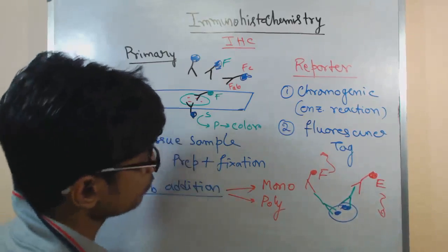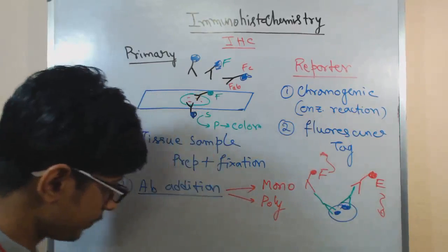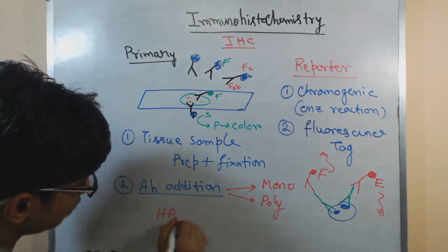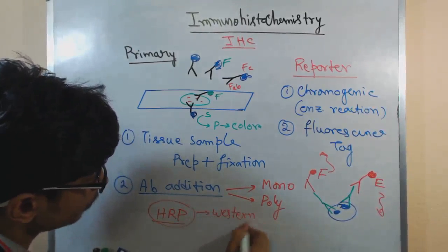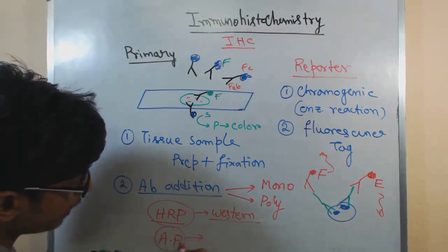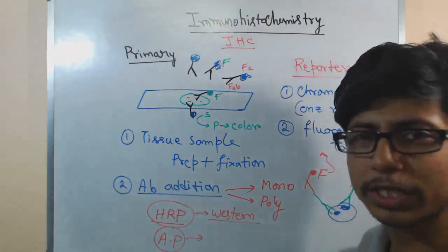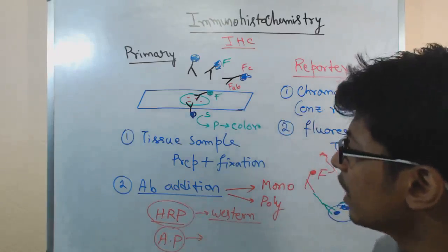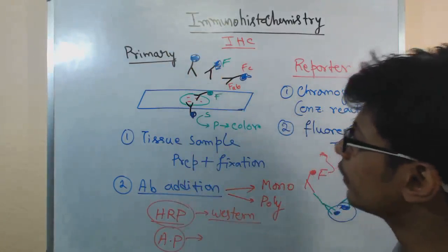The first one is specific with good attachment to the antigen; the second one can be modified easily. Two examples of such chromogenic enzyme-tagged antibodies: we can use the enzyme horseradish peroxidase — this is the enzyme also used in western blotting — and we can also use alkaline phosphatase, with color formation due to the phosphatase activity. These are the enzymes we can tag with the FC portion of antibody to finally get our results.